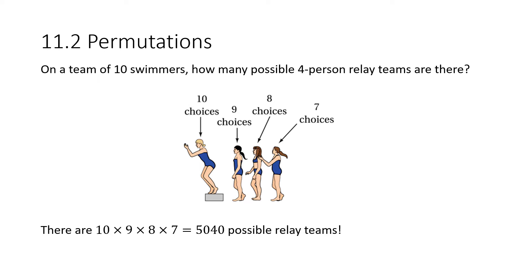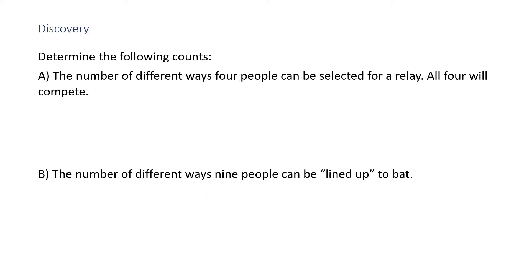Even so, in this lesson we're going to learn how to compute permutations directly. Discovery: Determine the following counts. Part A: the number of different ways four people can be selected for a relay — all four will compete. Piggybacking on the fundamental counting principle, we have four places to fill. With four competitors, we've got four to choose for the first place, then three for the second, two for the third, and only one candidate left for the last position, for a total of 24 different ways.